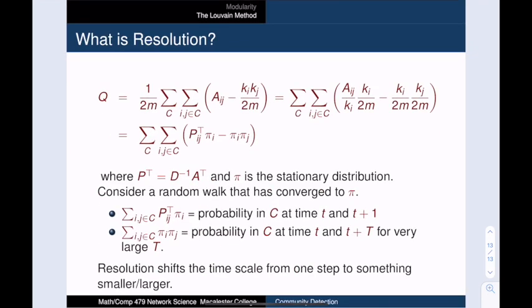Here is the math behind resolution. I won't go into the details, but here's the idea. We can rewrite modularity so that it is actually saying something about random walks on the network. You can see the appearance of the transition matrix, P, and the stationary distribution, pi. Recall that on an undirected network, this limiting distribution, pi, is proportional to the node degrees.